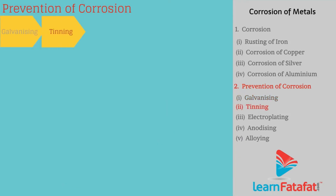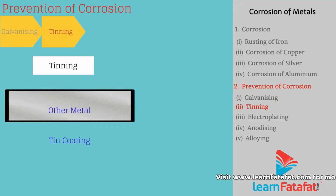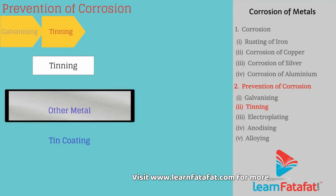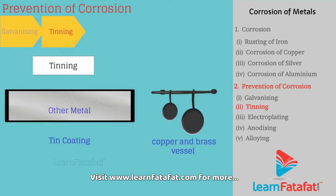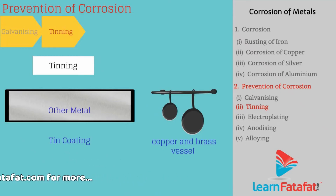Tinning. The process of giving a thin coating of tin to another metal is called tinning. Cooking vessels made of copper and brass are given a coating of tin to prevent corrosion.